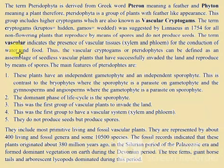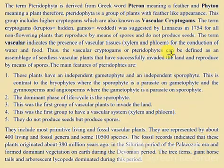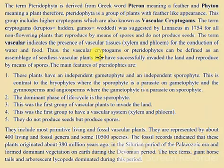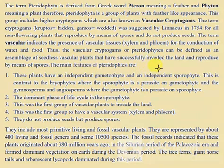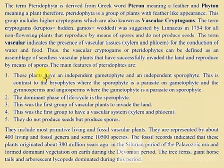The term 'vascular' indicates the presence of vascular tissues, xylem and phloem, for the conduction of water and food. Thus, the vascular cryptogames or pteridophytes can be defined as an assemblage of seedless vascular plants that have successfully invaded the land and reproduce by means of spores.